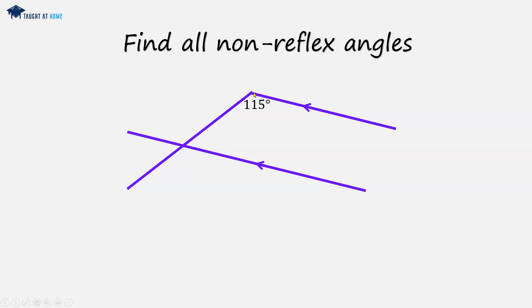This angle will be the same as this one, which is 115 degrees, and it will be the same as this one, which is also 115 degrees. And we can see that these two are vertically opposite.